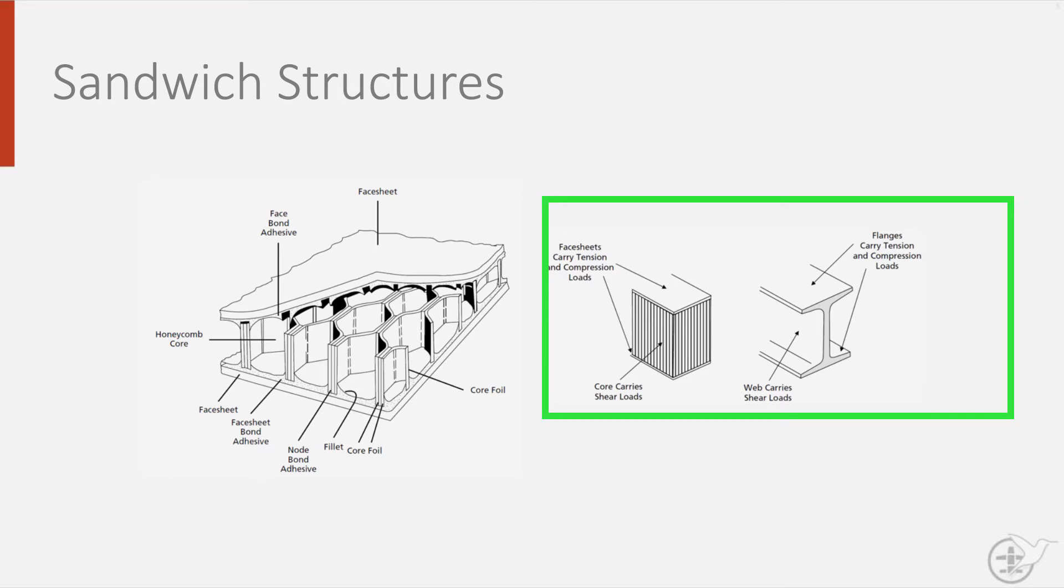Structurally, they work analogous to the principle of an I-beam, where the web carries all the shear load and the flanges carry the tension and compression loads. The core functions as the web and the face sheets as the flanges.